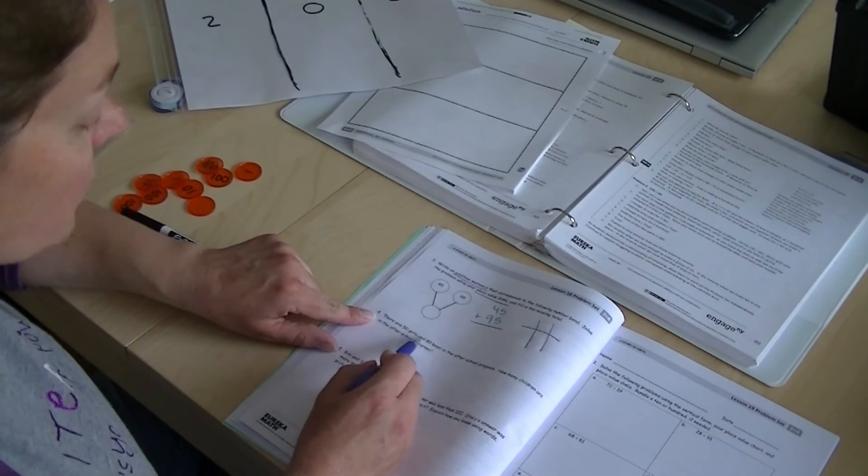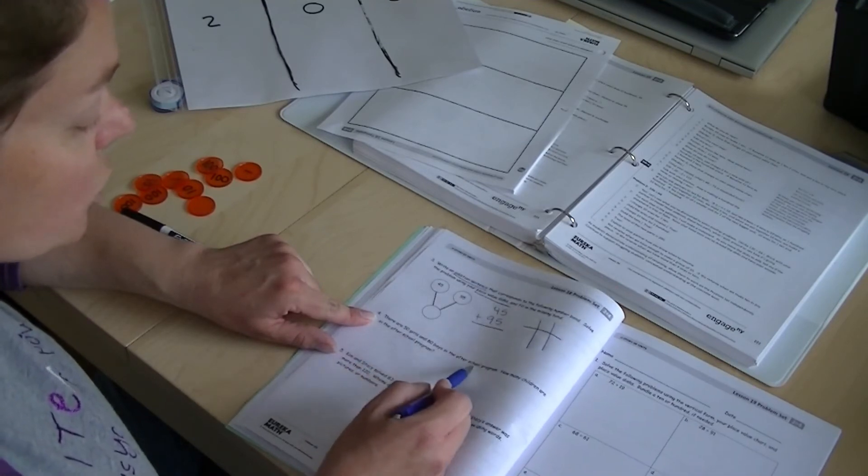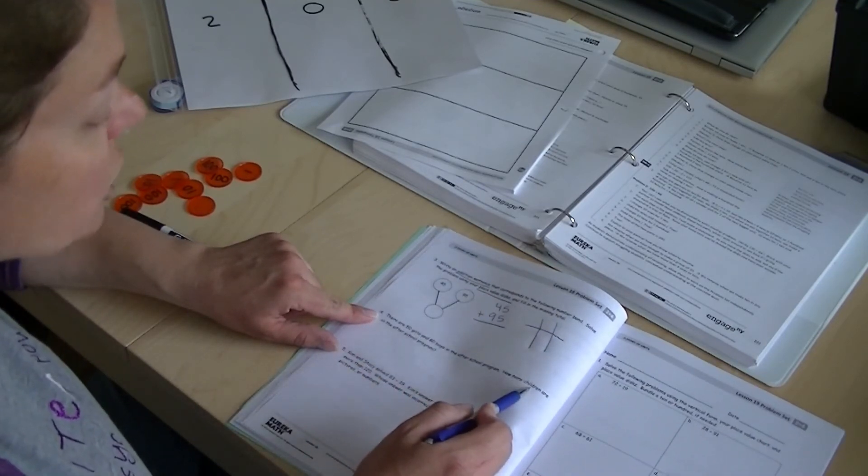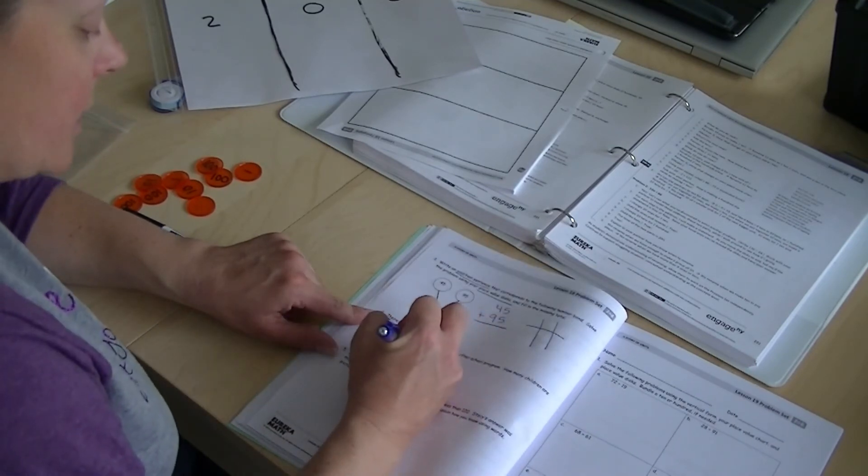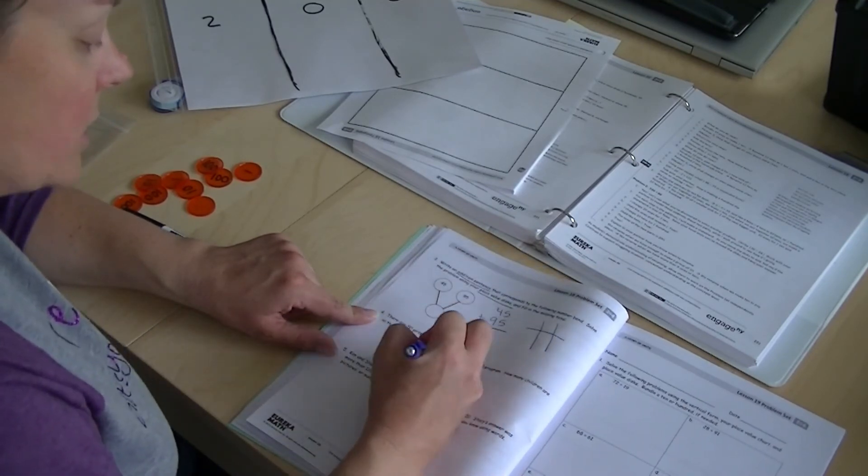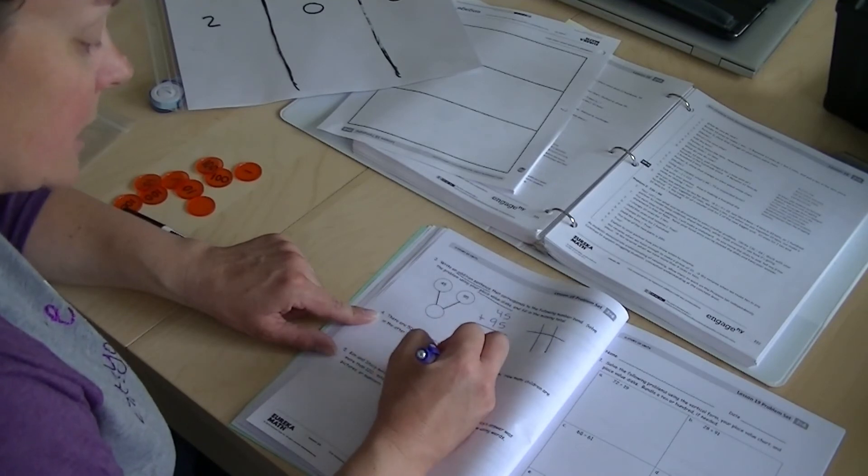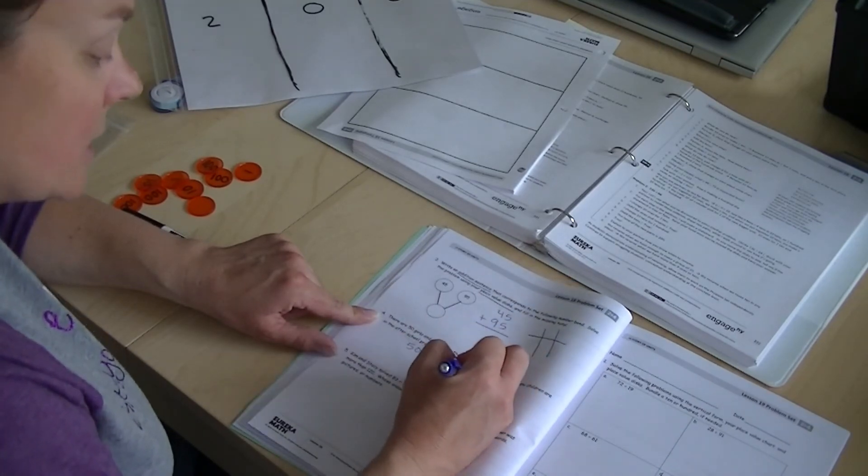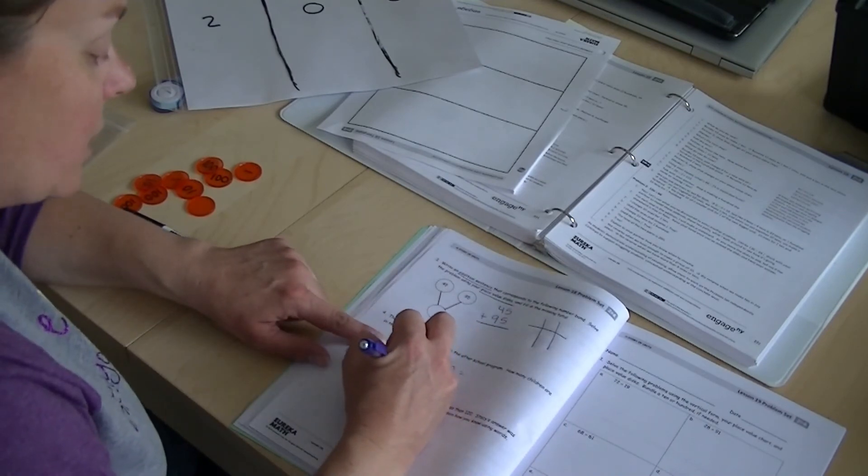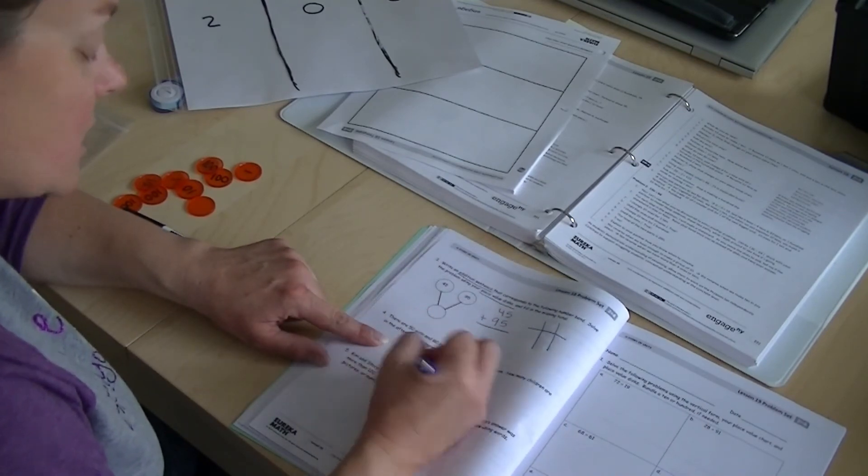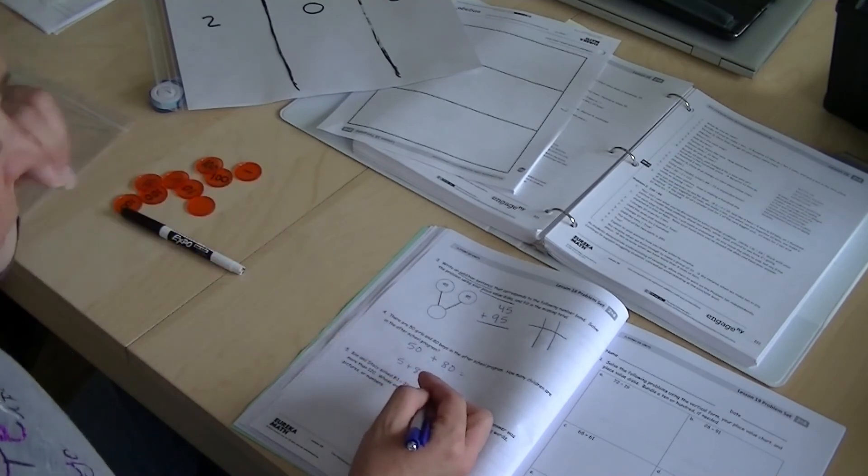There are 50 girls and 80 boys in the after-school program. How many children are in the after-school program? 50 girls and 80 boys. Figure this out. Children, I want you to think. That's 5 plus 8. Okay, think about what we've been learning.